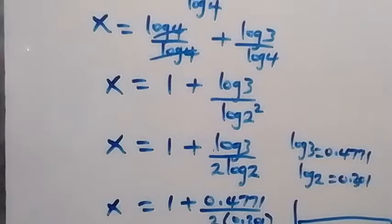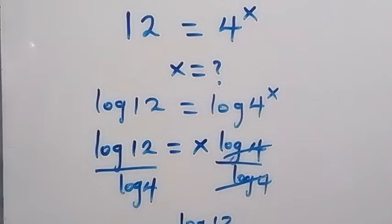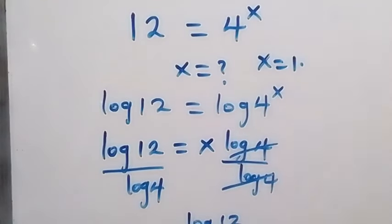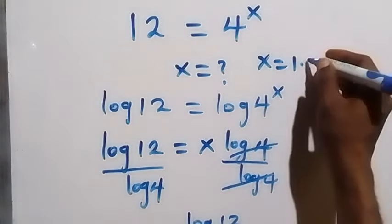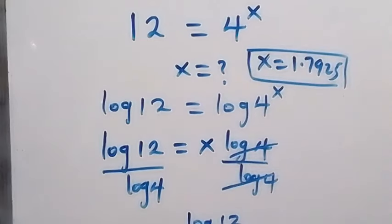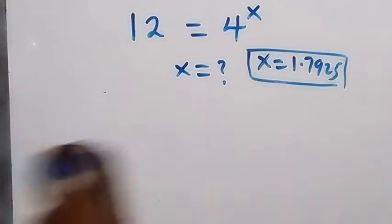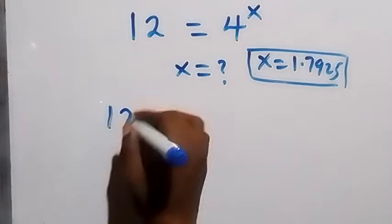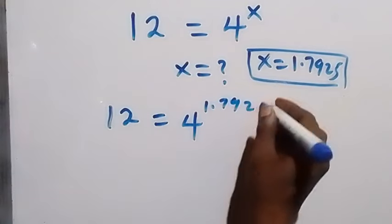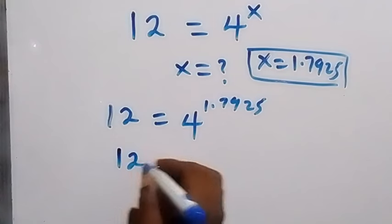Then to check, from what we have in the problem we are given 12 equals 4 raised to power x, and we got x to be equals to 1.7925. So let's substitute this and check. From here we have 12 equals 4 raised to power 1.7925.